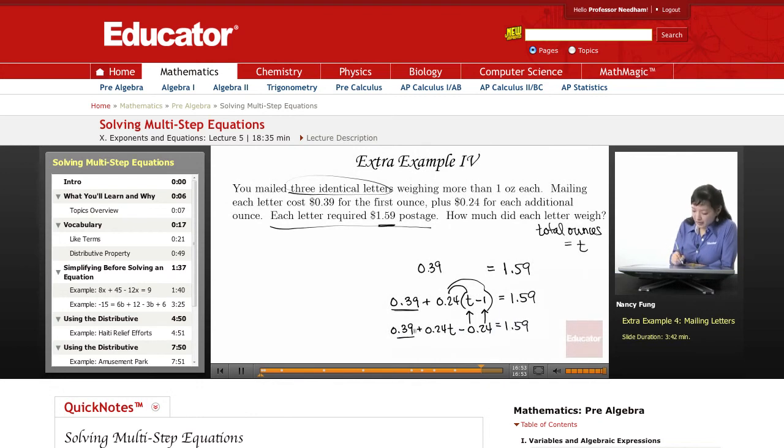I can combine my like terms, which are the 39 cents minus 24 cents. And that is 5, so 15 cents. So we have 0.15 plus 0.24T equals 1.59.